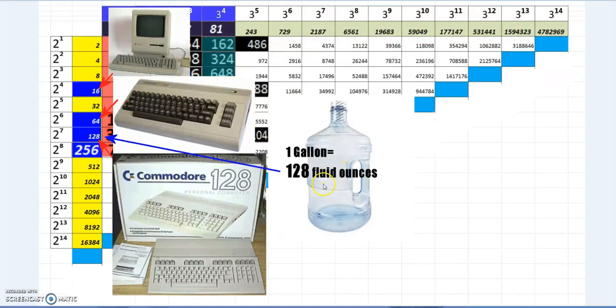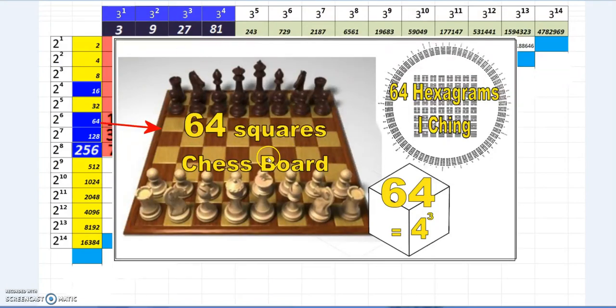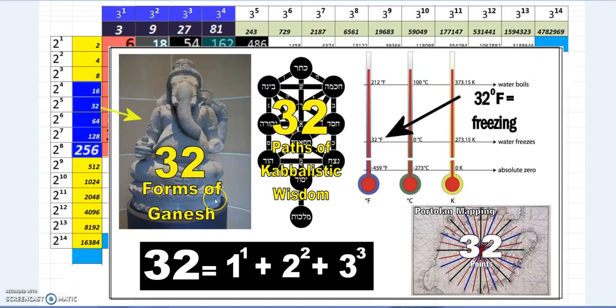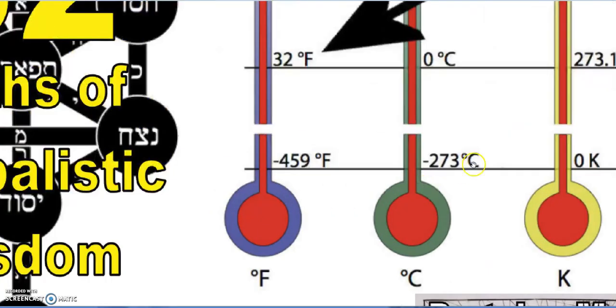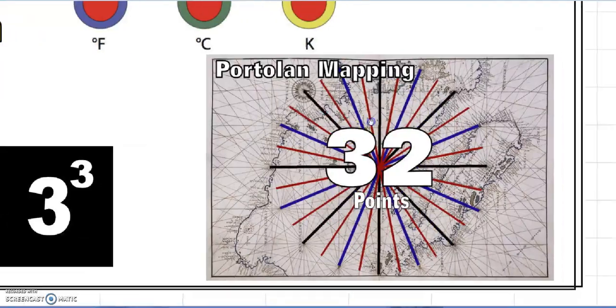Still in computing, this is important in all weights and measures. One gallon is 128 fluid ounces US. 64-piece chess set is one example. Also 64 hexagrams in the I Ching, a third-dimensional number. 32 forms of Ganesh, 32 paths of Kabbalistic wisdom, 32 degrees Fahrenheit is freezing, which is 273.15 Kelvin.